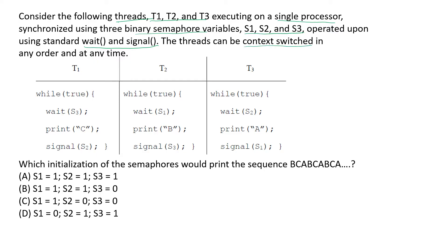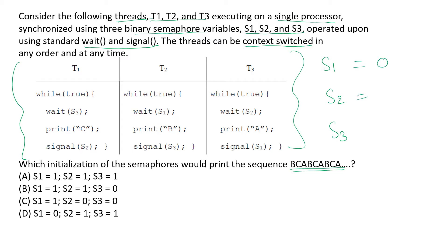These are the three processes with their critical sections. We need to determine the initial values of the semaphores S1, S2, and S3 which would enable us to get a particular sequence as the output of these three processes. Let us assume the initial value of all of them to be zero and see if that is possible, or if we need to change it.